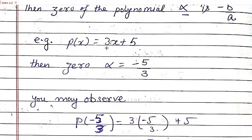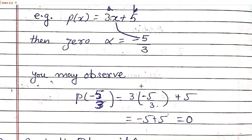Let us take an example. This is a linear polynomial of the type ax plus b. The zero of the polynomial, alpha, is always equal to minus b by a. The coefficient of x is a, the constant term is b, so minus b by a will be minus 5 by 3. The zero of this polynomial is minus 5 by 3. We'll verify: putting minus 5 by 3 in place of x gives 3 into minus 5 by 3 plus 5. The 3 cancels and minus 5 plus 5 is 0, confirming that minus 5 by 3 is the zero and equals minus b by a.